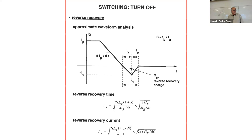Regarding RMS calculation: last class I told you that RMS is the square root of (1/T) times the integral over one period of the current squared. When you do not have a closed mathematical form, you split the waveform into segments — for example, a rectangle and two triangles — and use the known RMS formulas for each shape and their durations to approximate the total RMS. Alternatively, you can be mathematical, or use measurement tools in a simulator.